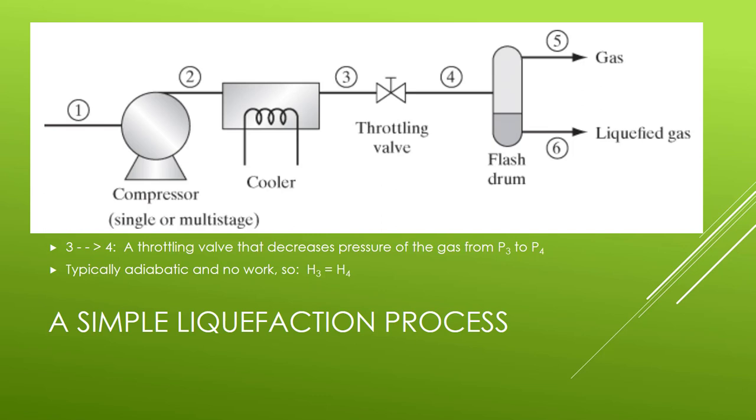Three to four is a throttling valve. This decreases the pressure of the gas from P3 to P4. Typically, these are adiabatic. They have no moving parts, and so therefore work can be considered to be zero. If you also have something fairly small, then you're going to have no change in kinetic or potential energy.